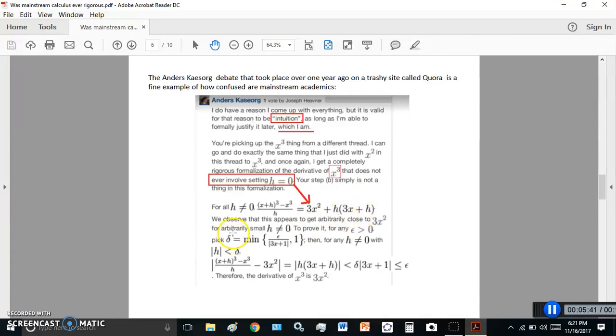You just can't. There's no way you can get it. So, he says, we observe that this appears to get our belief. Oh, really? We do observe that? There's only one way we know that, and that's by setting h equals to zero. So, to prove it seems almost senseless because if we set h to zero, we get 3x squared. And there's really nothing to prove.